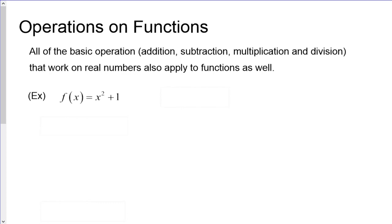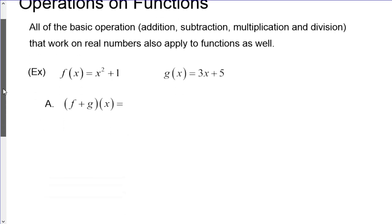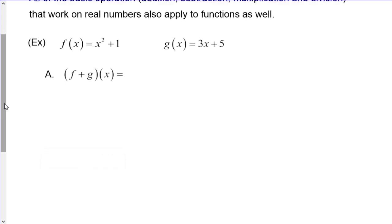Let's say we have one function f of x equals x squared plus 1, and another function g of x equals 3x plus 5. The first operation on functions is f plus g of x, which is just another way of notating f of x plus g of x — a new notation to represent the addition of these two functions, which is pretty straightforward.